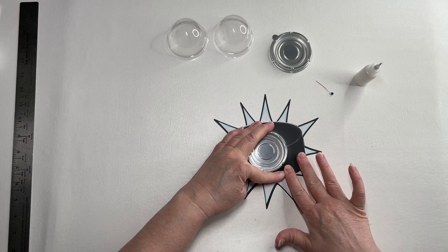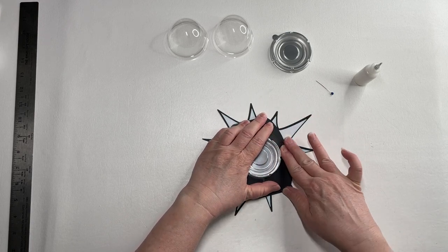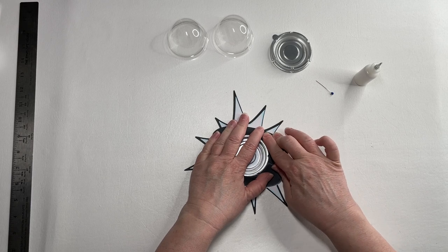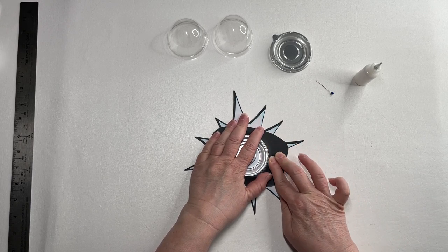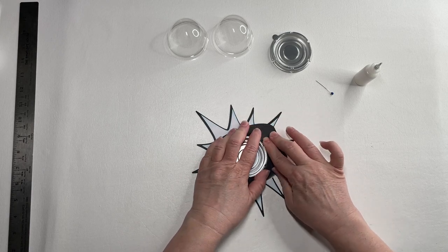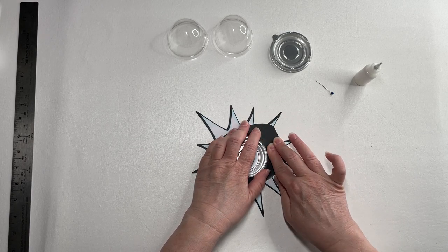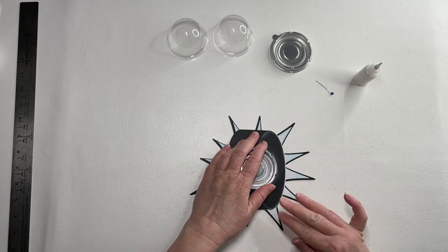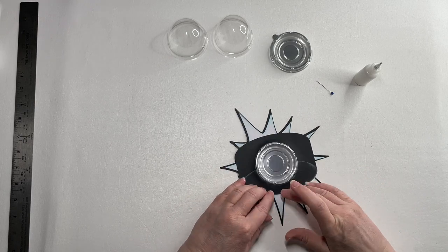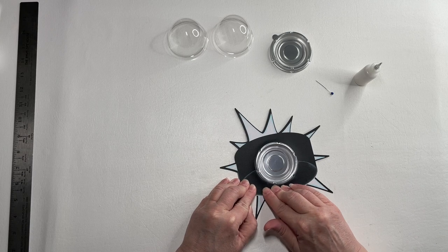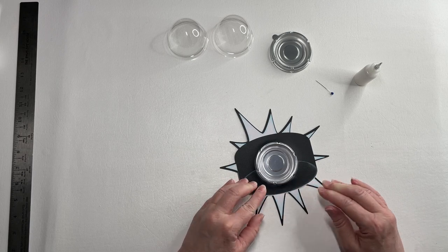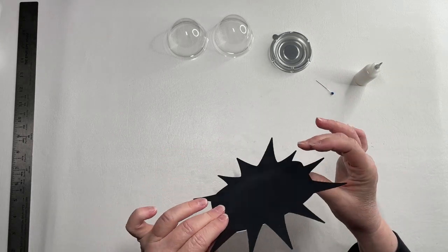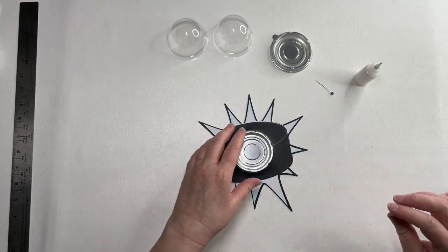So the base of these domes has a quarter inch lip. What I'm doing is running my finger right here around the base and stretching the paper around the base of this dome. It's not too difficult, I don't think. It just takes a few seconds to get that to go.